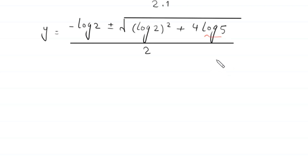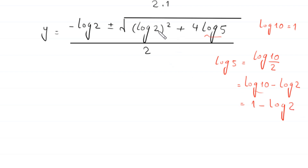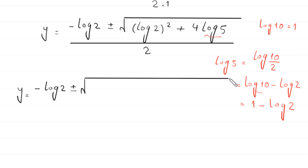Now, log of 5 can be written as log of 10 divided by 2, which is log 10 minus log 2. Since log of 10 equals 1, this becomes 1 minus log of 2. So we rewrite the expression as y equals negative log 2 plus or minus the square root of log 2 squared plus 4 times (1 minus log 2), all divided by 2.